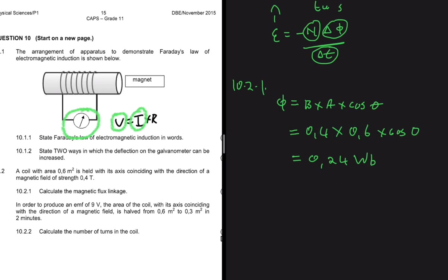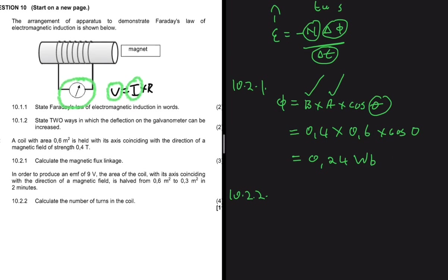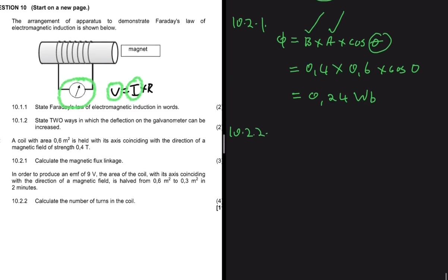That's how you calculate the magnetic flux linkage — using the magnetic field strength, the area, and the angle. The angle is zero most of the time, but not always. Then 10.2.2 says: in order to produce an EMF of 9 volts...